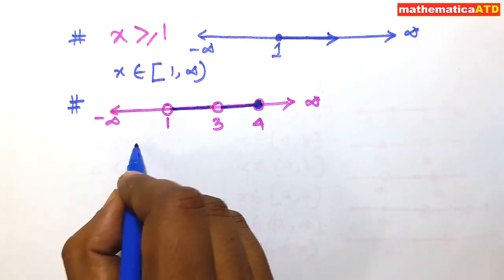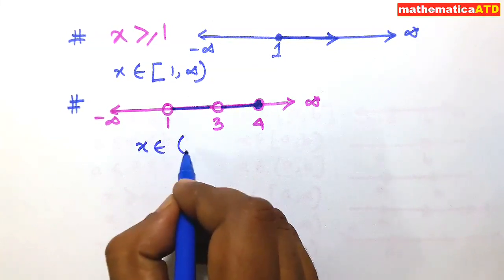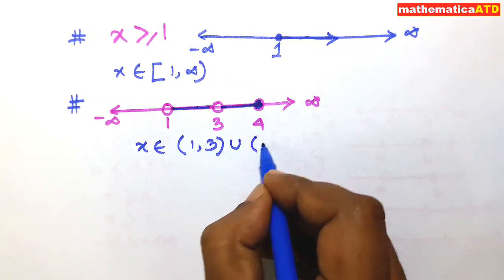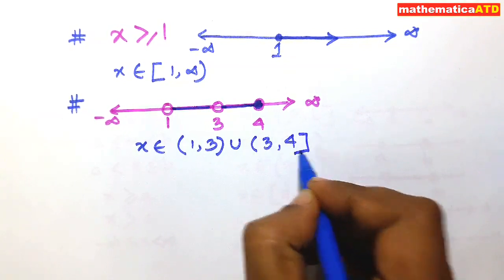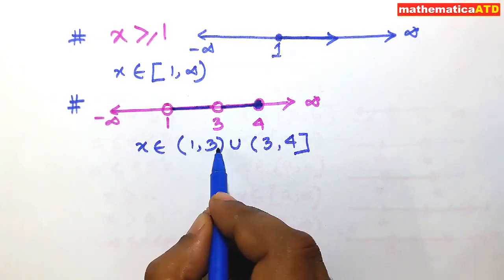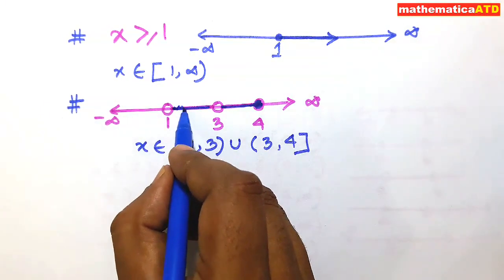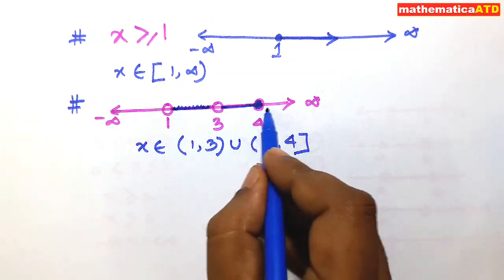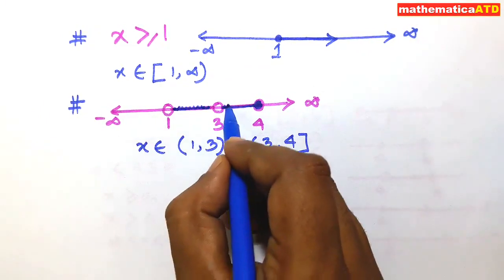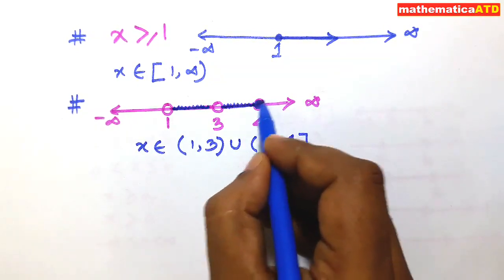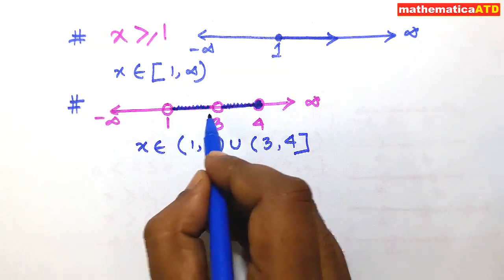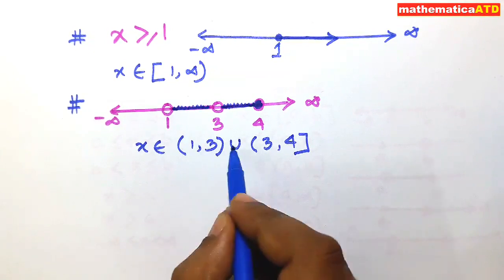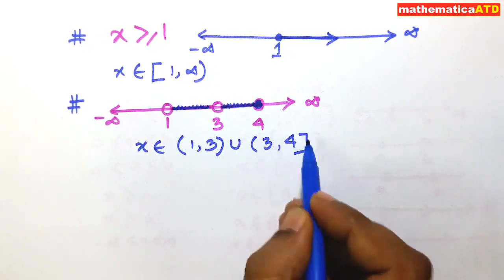In notation form, x belongs to the open interval (1, 3) union the semi-open interval (3, 4]. That means between 1 and 3 you can take any value excluding 1 and 3. In the zone from 3 to 4, you can take any real number including 4, because 4 is darkened, but 3 is white and therefore excluded. So x belongs to (1, 3) ∪ (3, 4].